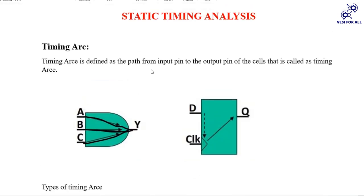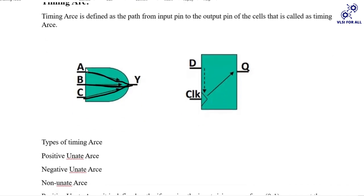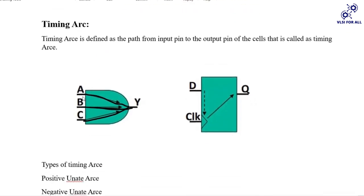Today I am explaining about static timing analysis and the timing arc. A timing arc is defined as the path from the input pin to the output pin of a cell. The cell delay is having a timing arc that is the path from input pin to the output inside the cell — one timing arc.